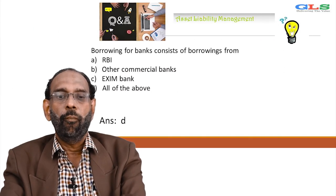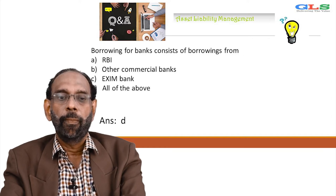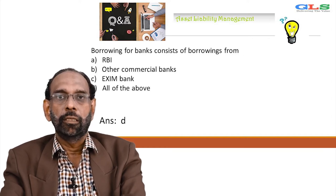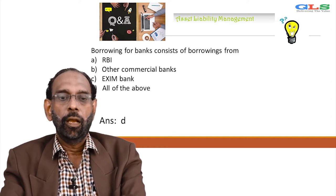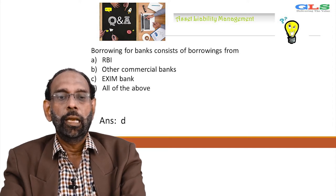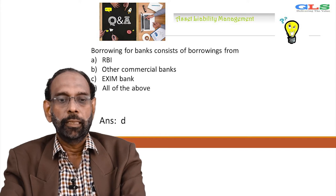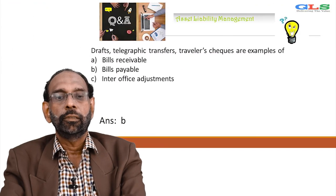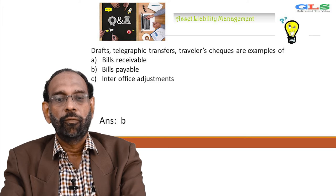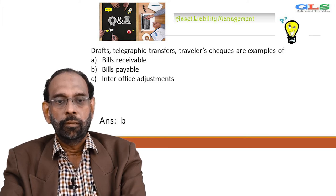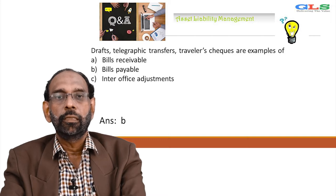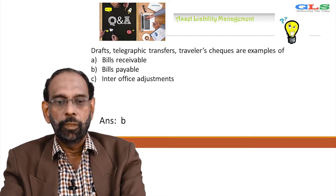Next question: borrowing for a bank consists of — A: borrowing from RBI, B: other commercial banks, C: Exim bank, D: all of the above. Answer is D — borrowing can be from anyone: RBI, other commercial banks as well as Exim banks. Draft, telegraphic transfers, travelers checks are examples of — A: bills receivable, B: bills payable, C: inter-office address. Answer is B, that is bills payable.